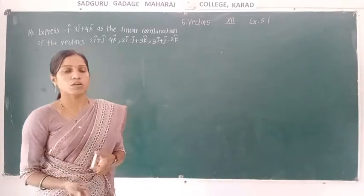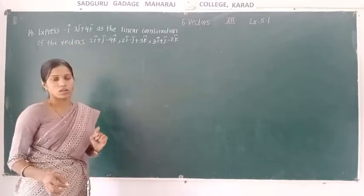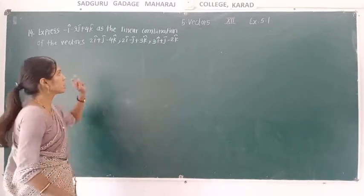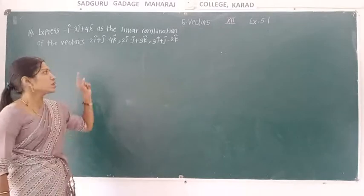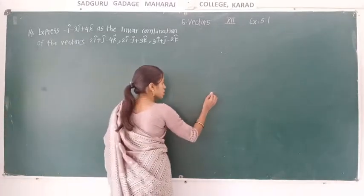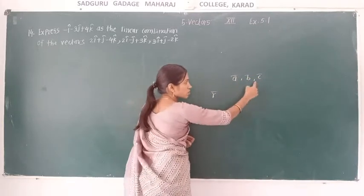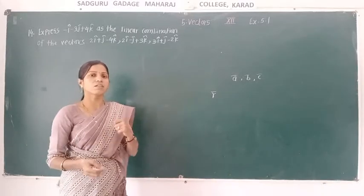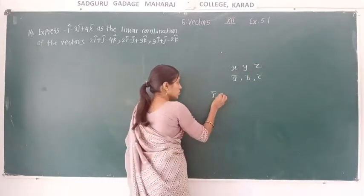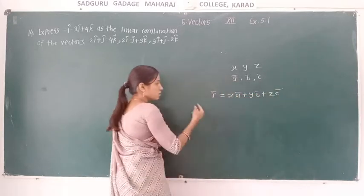In this example, we have to express this vector as a linear combination of these three vectors. First of all, we consider these three vectors as ā, b̄, and c̄. So this vector r̄ can be expressed as a linear combination of ā, b̄, and c̄. Since there are three vectors, we consider three scalars x, y, and z, and the linear combination is written as xā + yb̄ + zc̄.